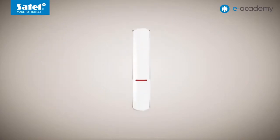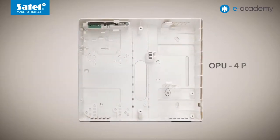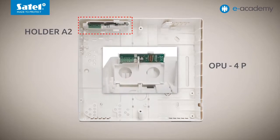Let's get back for a while to the ACU280, the smaller controller. With its compact dimensions, it requires little space for installation. In addition, the PC board of this module can be placed in a special holder, A2 mount, intended for installation inside the OPU 4P enclosure. This ensures not only convenience, but also aesthetic appearance of the system.